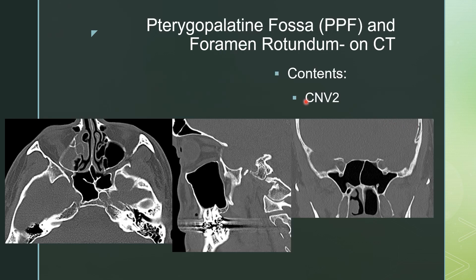The pterygopalatine fossa, or PPF, and foramen rotundum. On CT, you're looking at that retromaxillary space — this canal dorsal to the maxillary sinus. It contains mostly fat, as you can see on imaging, but the contents are cranial nerve V2. Here it is on the sagittal; you can see the PPF, the pterygopalatine fossa. Then here is foramen rotundum.